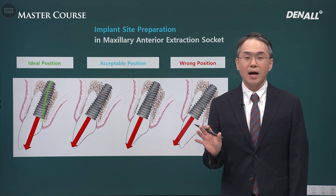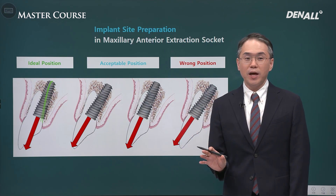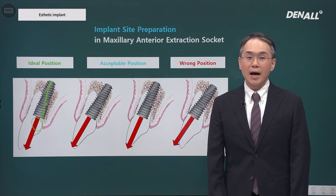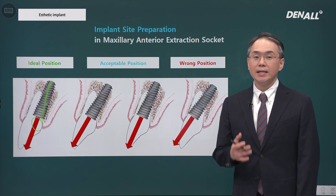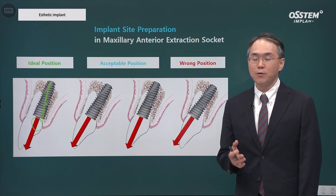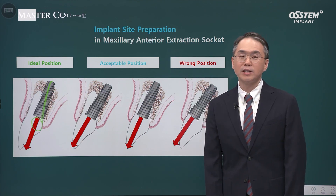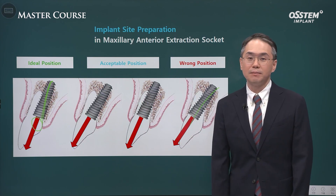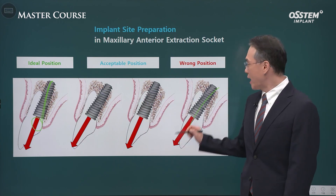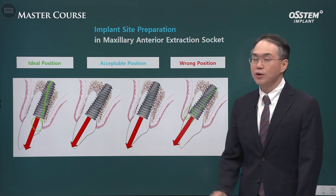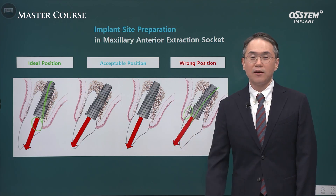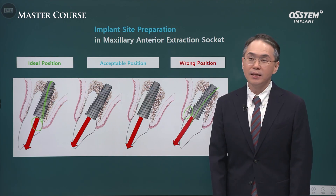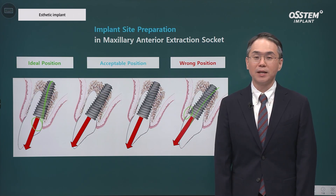In other words, the implant top should be below the cingulum rather than the incisal edge — that is most ideal. However, as mentioned, as we do drilling, the implant can be buccally deviated and the angulation can change. If placed in this way, it is prosthetically negative and physiologically unfavorable. The thin labial bone, as it becomes resorbed, the implant thread can be exposed or accompanied with gingival recession, resulting in a very aesthetically unfavorable outcome.